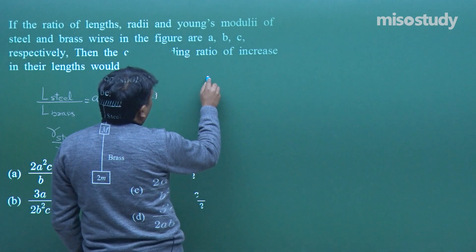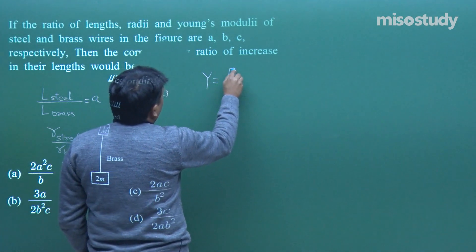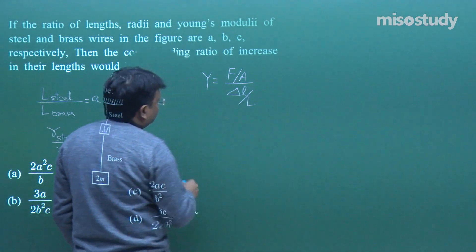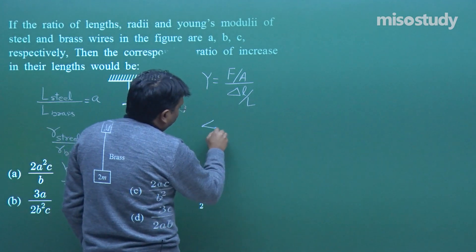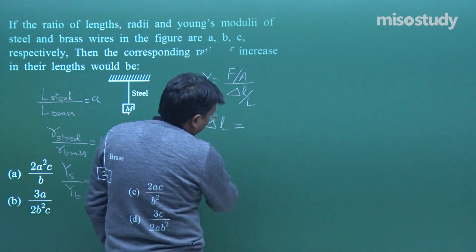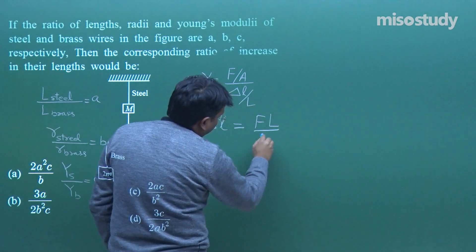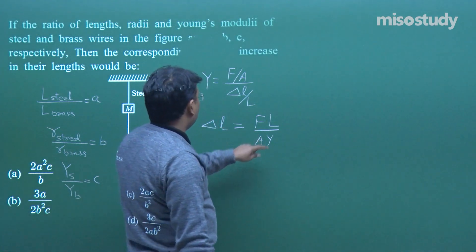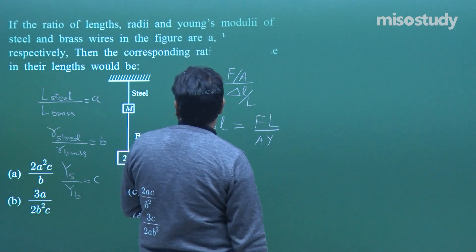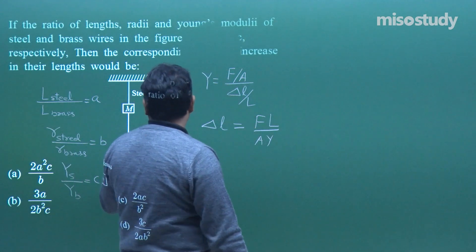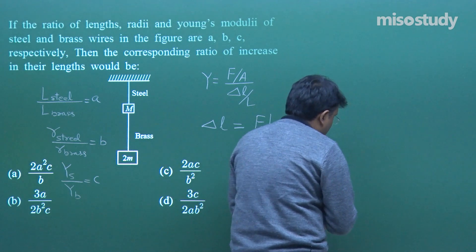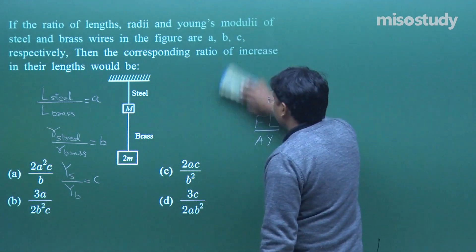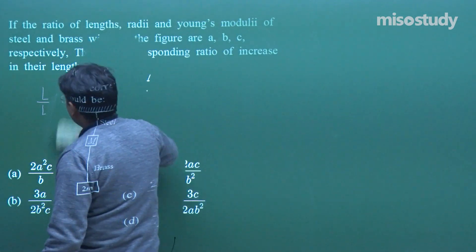We have the formula: Y is equal to F upon A, upon delta L upon L. From here, if I write delta L, it equals FL upon AY. Now you have area, length, and Y - all given. For force, we can multiply with g to get it. Let us solve this - it will take a little time, but anyway it is not a difficult one.